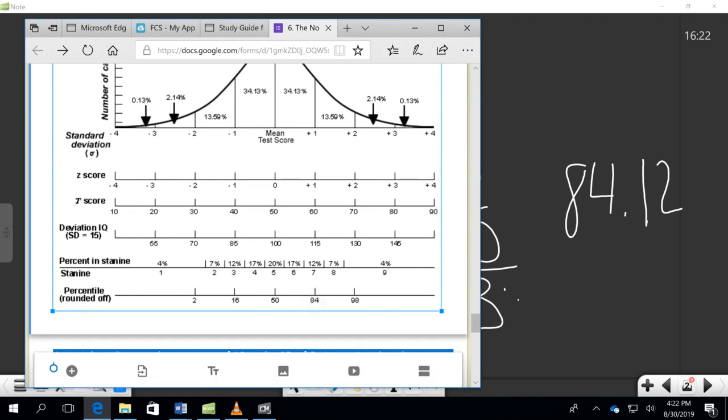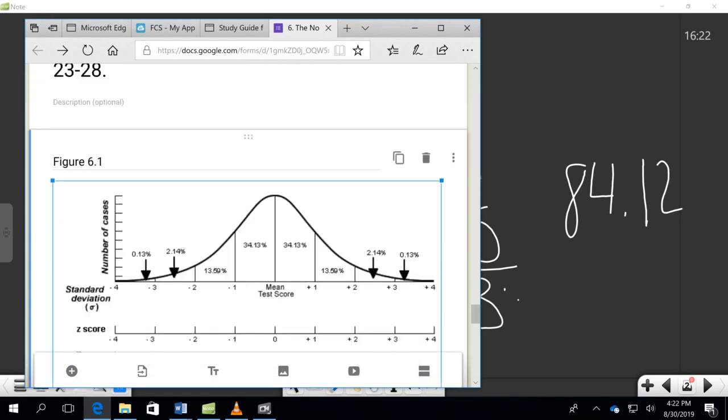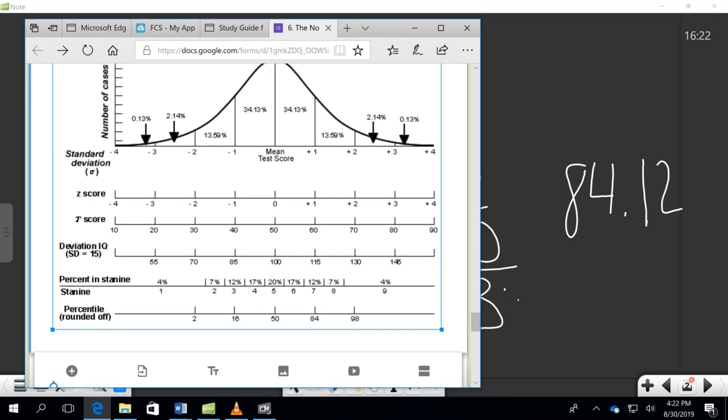Percentile rounded off was 84, which was in line with plus one standard deviation above the mean test score. And that is it.